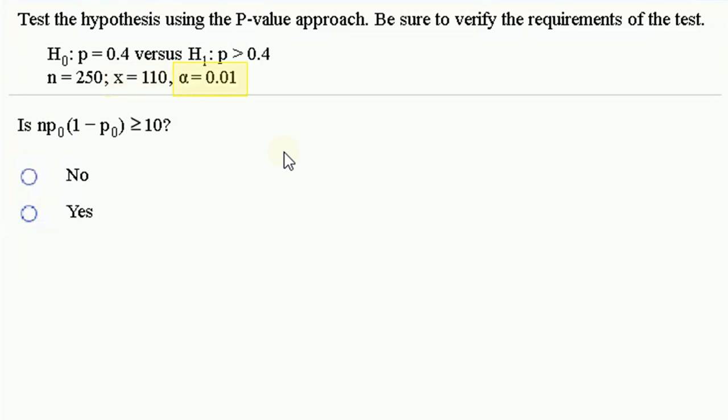And the alpha level of 0.01 is the decider for whether or not to reject this null hypothesis. If we calculate a p-value, if it's less than the significance level, that means we have sufficient evidence to reject the null hypothesis in favor of this particular alternative hypothesis, that the proportion is greater than 0.4.